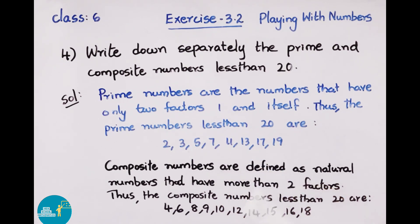Composite numbers are defined as natural numbers that have more than two factors. Composite numbers are natural numbers that have more than two factors. Thus, the composite numbers less than 20 are: 4, 6, 8, 9, 10, 12, 14, 15, 16, and 18. These are the composite numbers less than 20.